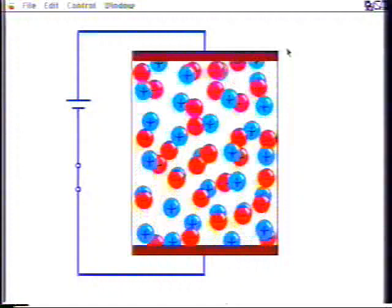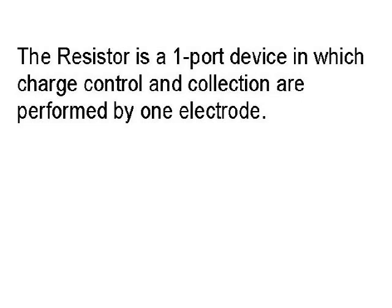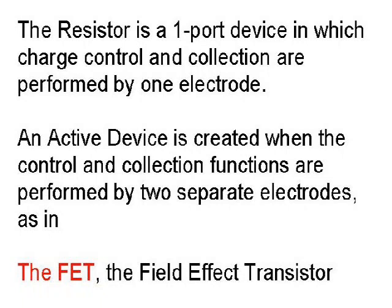The second important feature of this model is that the top electrode controls the amount of current and collects the current — two distinct functions: control and collection of current. In the resistor, one electrode performs both functions. To make an active three-terminal or two-port device, one merely has to separate the two functions so that the current of the output electrode is controlled by a different electrode, the input terminal.